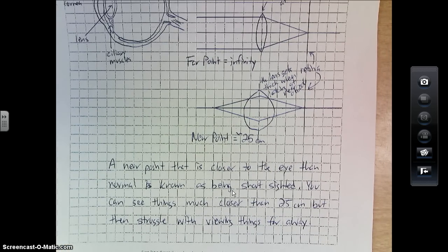A near point that is closer to the eye than normal, or closer than 25 centimeters, is known as being short-sighted. The benefit of being short-sighted is that you can see things that are closer than 25 centimeters away from your face without having to struggle.